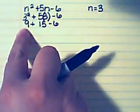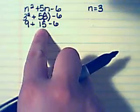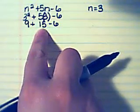Okay, since I'm left with all addition and subtraction, I can just move from left to right. 9 plus 15 is 24. 24 minus 6 is 18.